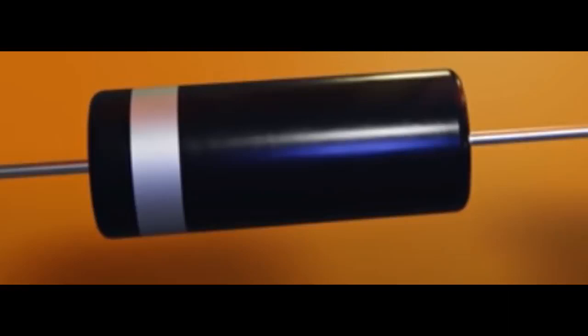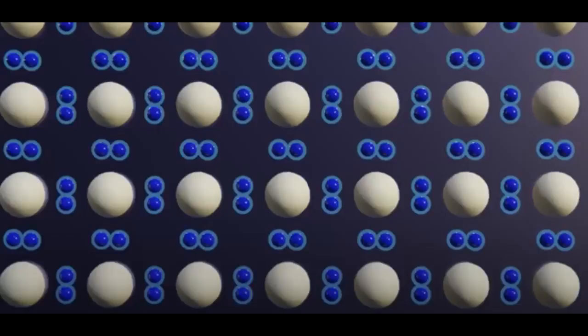If we examine the atomic structure of pure silicon, we can see that each atom has 4 valence electrons that are shared with the other 4 silicon atoms around it, forming a crystalline structure with covalent bonds. They share electrons resulting in a total of 8 valence electrons per atom.